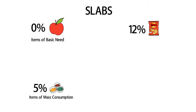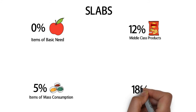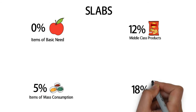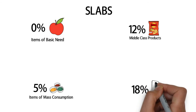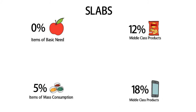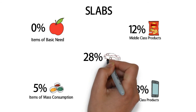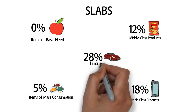Next are the 12% and 18% slabs, which comprise products for middle-class people. Products like processed food fall into the 12% slab, while smartphones fall into the 18% slab. The last slab is the 28% slab, which contains luxury items like sports cars, diamonds, etc.